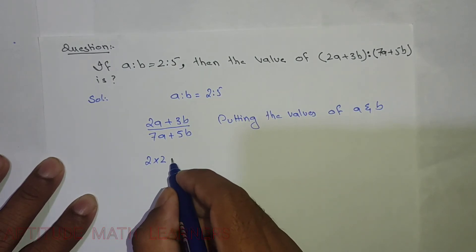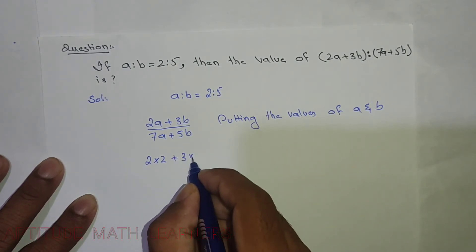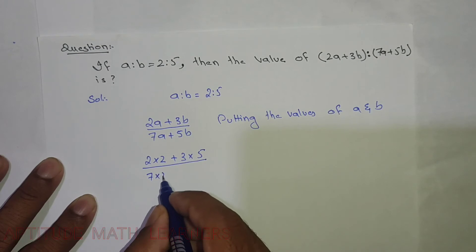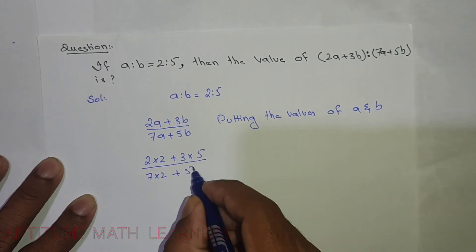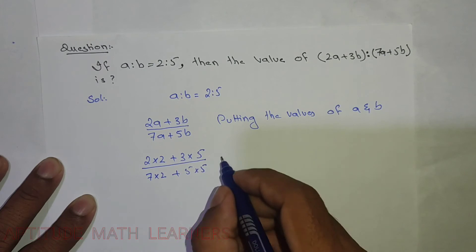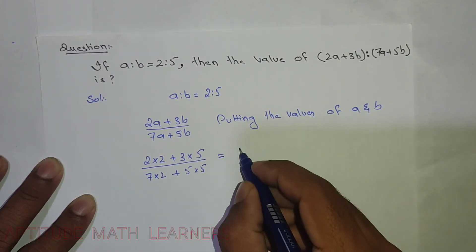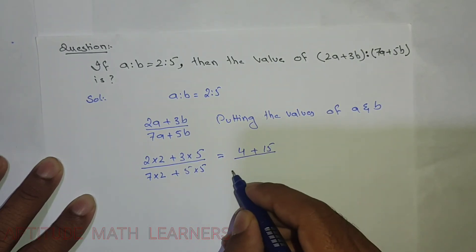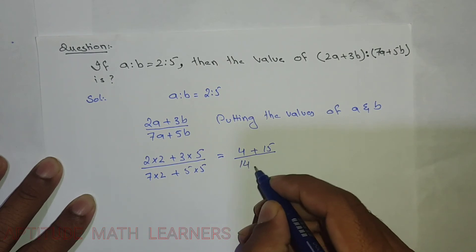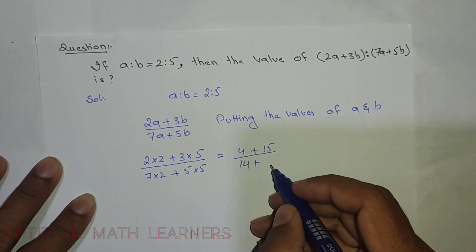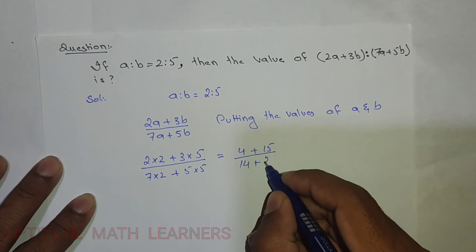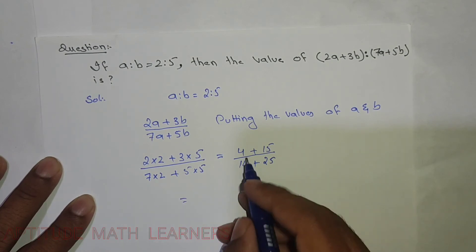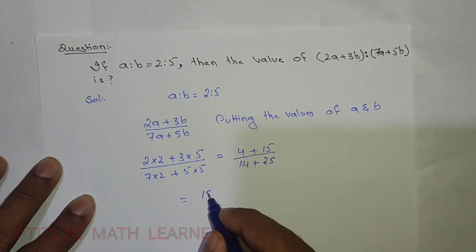So here we get 2×2 = 4 plus 3×5 = 15 in the numerator, and 7×2 = 14 plus 5×5 = 25 in the denominator. Our answer becomes 19/39. This is our answer.